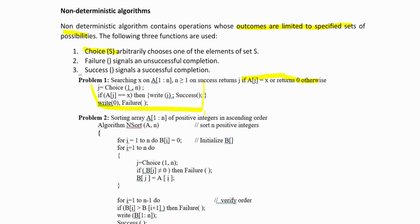Then we have sorting an array. Given an array of positive integers, we sort it in ascending order with L and N elements. For I = 1 to N, initialize B[I] = 0. Then for I = 1 to N, select an element using choice. If B[J] is not equal to 0, call failure; otherwise, update B[J] with that element. To verify, for I = 1 to N−1, if B[I] is greater than B[I+1], write failure; else write B[1..N] as success. This is sorting using choice, failure, and success in non-deterministic algorithms.